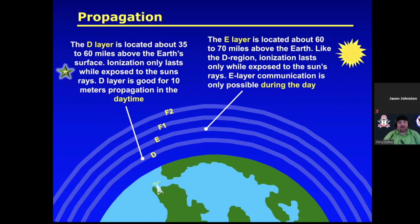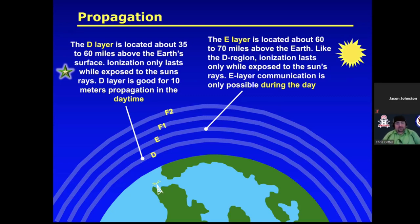The D layer, located about 30 to 60 miles above Earth's surface, only ionizes while exposed to the sun's rays. It's good for 10-meter propagation during the daytime. The E layer is located 60 to 70 miles above Earth, and just like the D region, it lasts only while the sun is up ionizing and charging that layer. E layer communication is only possible during the day.